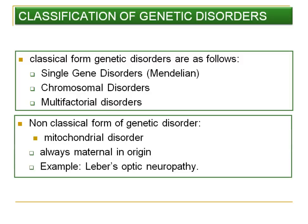The non-classical form of genetic disorder is also known as mitochondrial disorder. Mitochondrial disorders are always maternal in origin, because during fertilization the mitochondria present in the neck region of the sperm undergo degeneration — only the nucleus persists, forming the male pronucleus, which fuses with the female pronucleus. All mitochondria are therefore derived from the mother. An example is Leber's Optic Neuropathy.